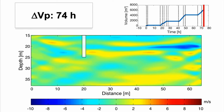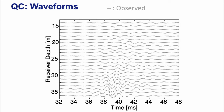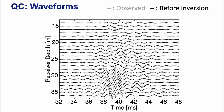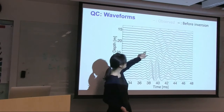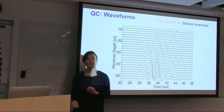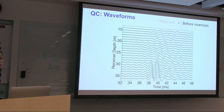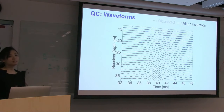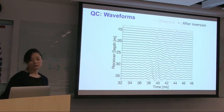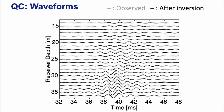Before interpreting, we QC the waveforms. Showing the shot gather in trace format: the observed data and the synthetic computed using the baseline FWI velocity model mostly agree, but there is a slight time shift and some amplitude difference. After performing the time-lapse full waveform inversion, the estimated synthetic data much better reproduces and fits the observed waveform. This fitness gives us confidence to interpret the inversion result.